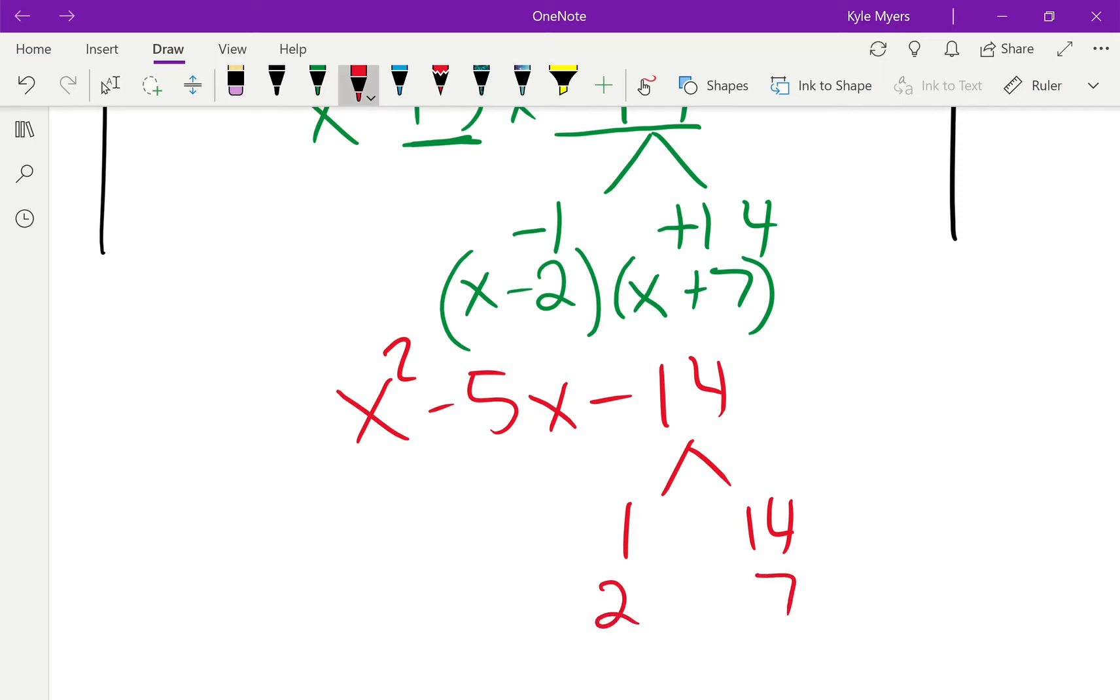But 2 and 7 will work as long as I make the 7 negative and the 2 positive. 2 minus 7 is negative 5, or negative 7 plus 2. It still multiplies to give me negative 14, so double check. I throw x's in front and I'm done.